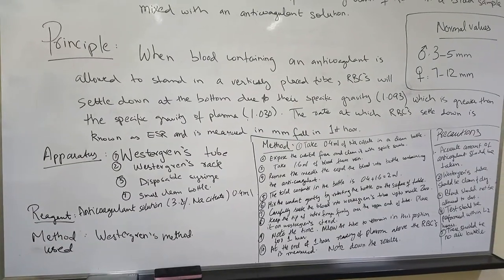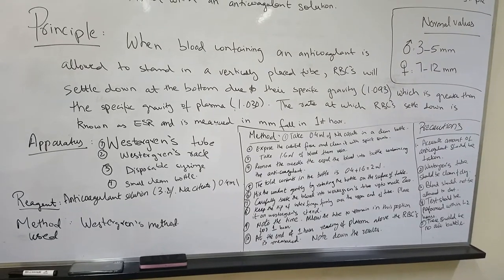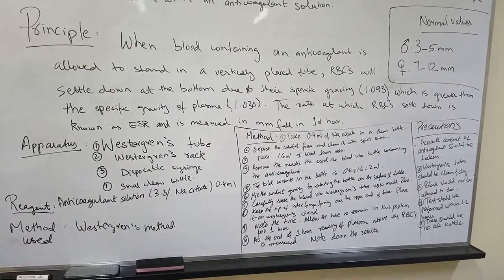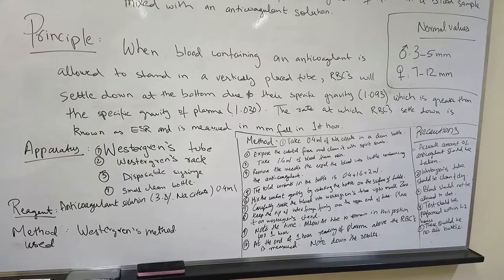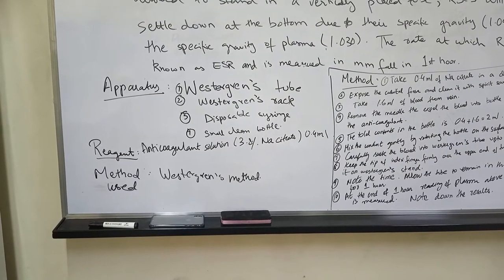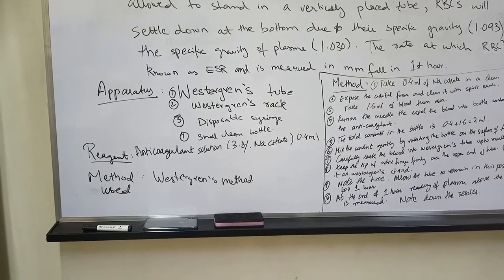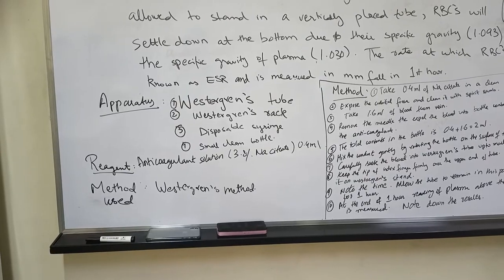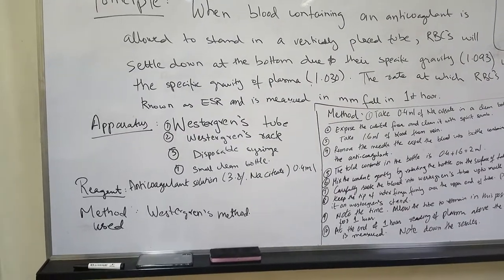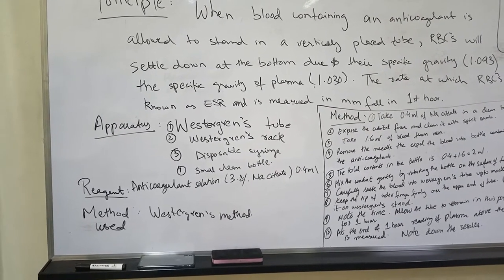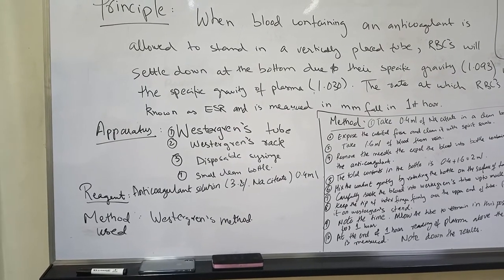The apparatus required includes a Westergren tube, a Westergren rack or stand, a disposable syringe, and a small clean bottle. The reagent needed is an anticoagulant solution, which is 3.8% sodium citrate. The method we use is the Westergren method.